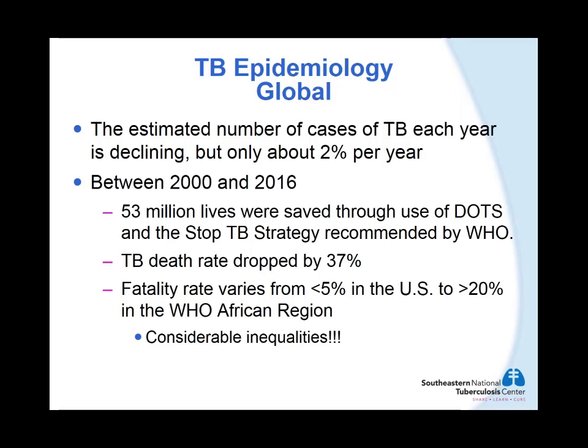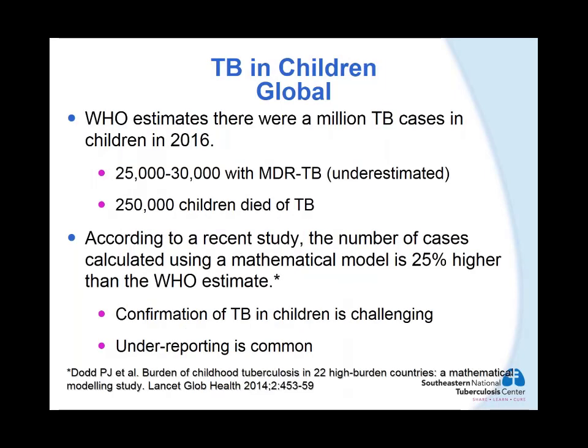The estimated number of TB cases each year is declining, but very slowly — only about 2 percent per year. Between 2000 and 2016, an estimated 53 million lives were saved through DOTS — Direct Observed Therapy Short Course — and the Stop TB strategy recommended by the World Health Organization. During this period, the TB death rate dropped by 37 percent. However, fatality rates vary widely from less than 5 percent in the U.S. to more than 20 percent in the African region, highlighting the tremendous inequalities that still persist.